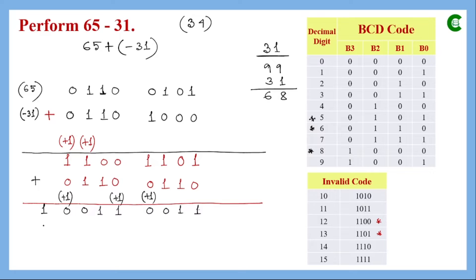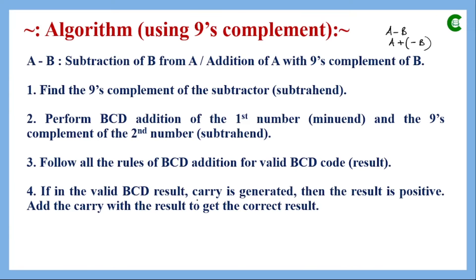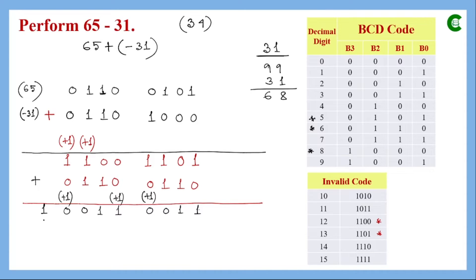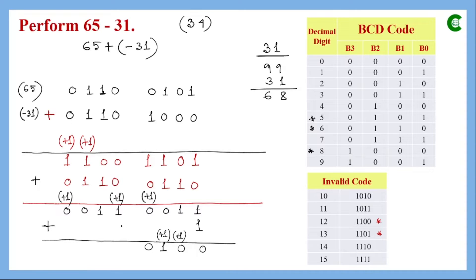After the correction addition, the first digit is represented by 4 bits, the second digit by another 4 bits, and we have a carry. Going back to the algorithm: if there is a carry, the result is positive and we add that carry to the result to get the final correct answer. We perform the carry addition: 1+1=10, propagating accordingly through the bits.